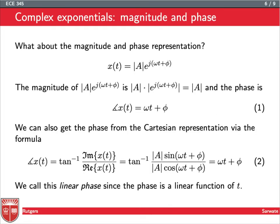So what about the magnitude and phase representation? Going back to our rewriting of x of t, it's already in magnitude and phase representation, but just to be clear about it, we take the magnitude of both of the parts. The magnitude of the product is the product of the magnitudes. And remember, e to the j something always has magnitude equal to one, so we're just left with magnitude of a as the magnitude of x of t.